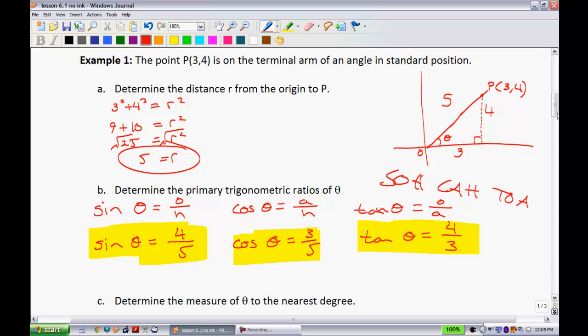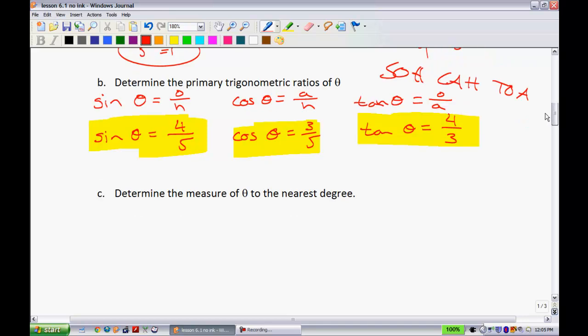Lastly, C says, determine the measures of theta to the nearest degree. Well, you could use any of these ratios above. You could use the sine, cosine, or tangent of them, and you would have gotten the same answer. So I'm just going to arbitrarily go and take this first one right here, and we're going to find out what theta is. So it says, determine what it is. So I'm going to take sine of theta, and I'll take that, and I set it equal to 4 over 5. And now we need to isolate. In order to get theta by itself, what I'm basically doing is I'm dividing by sine on both sides. This gives me the sine inverse of 4 over 5, like so. Now, using your calculator right now, you need to make sure that you're in degree mode.